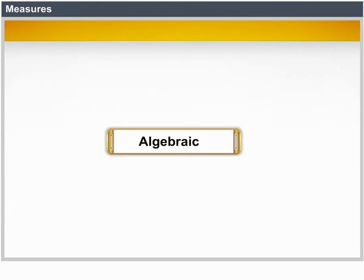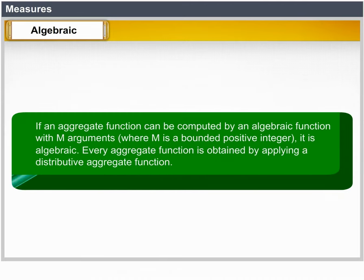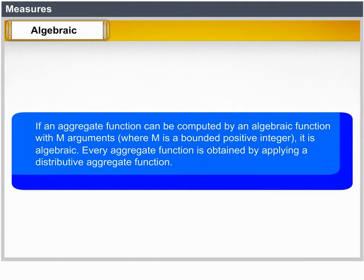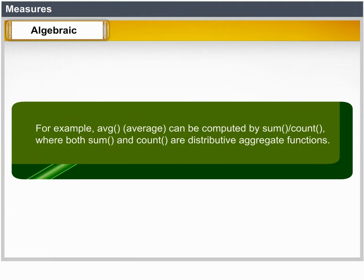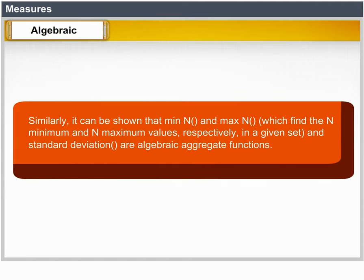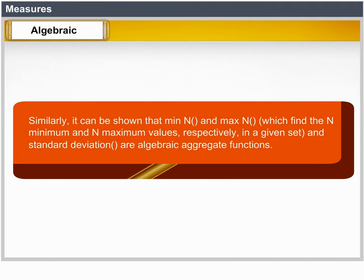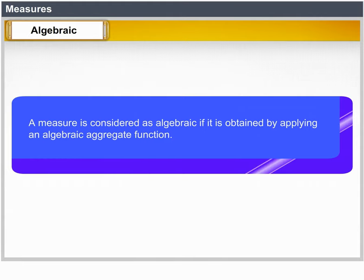Algebraic: An aggregate function is algebraic if it can be computed by an algebraic function with m arguments (where m is a bounded positive integer), each obtained by applying a distributive aggregate function. For example, average can be computed by sum/count, where both sum and count are distributive aggregate functions. Similarly, min_N and max_N — which find the n minimum and n maximum values respectively in a given set — and standard deviation are algebraic aggregate functions. A measure is algebraic if it is obtained by applying an algebraic aggregate function.